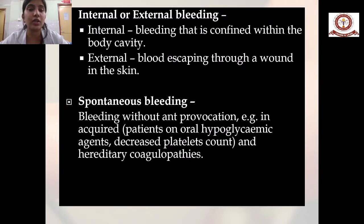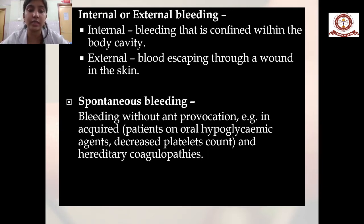Internal hemorrhage is bleeding confined within the body cavity, whereas external hemorrhage is blood escaping through a wound in the skin. Spontaneous hemorrhage is bleeding that can occur without any provocation, such as in acquired or hereditary coagulopathies.